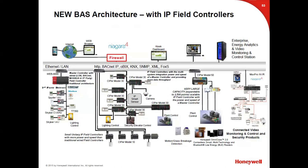That means if you have a program running on a critical environment air handling unit — an OR, for example — and you need to make a program change, you can connect to the network, get into that controller, and make a program modification while the unit continues running. When the change is done, it's live and active. There's no download step where the processor stops and loads a new program, shutting down your equipment. That is a pretty big feature. The last product, the Cyper Model 30, is about to be released in June.